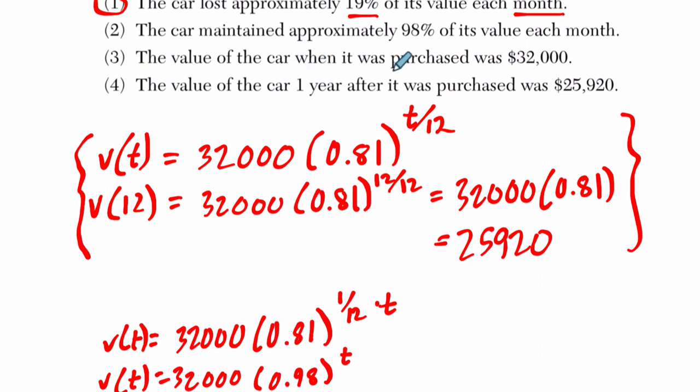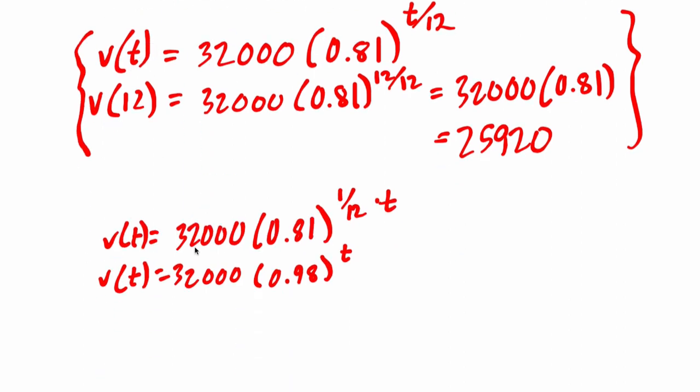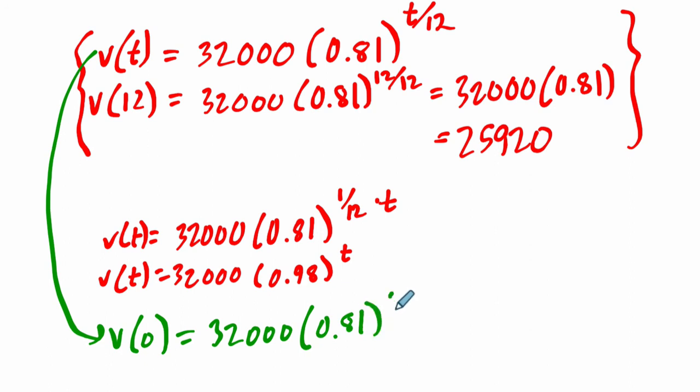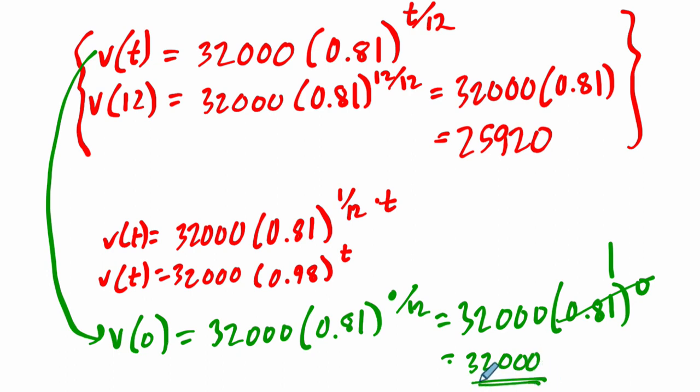Choice three, the value of the car when it's purchased was $32,000. If you plug in zero for t, you would see that that's true. V of zero equals 32,000 times 0.81 to the zero divided by 12. Zero divided by 12 is just zero. So it's 32,000 times 0.81 to the zero. What's anything to the zero power? That's just one.